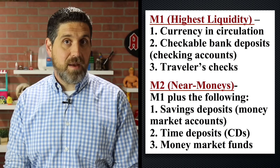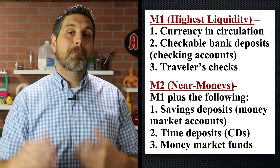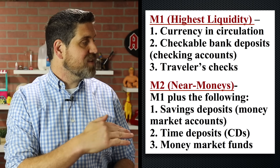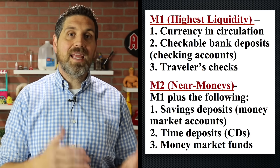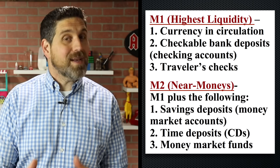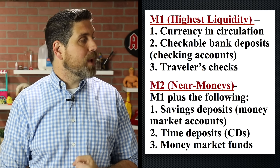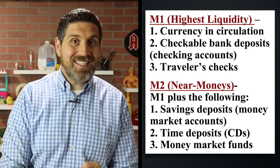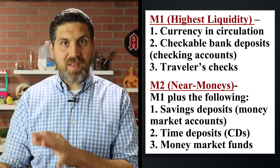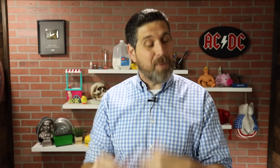M2 is near monies — it includes everything in M1 plus money in savings accounts, CDs, and money market funds. The point is this is all money because it has high liquidity: it can be quickly and easily converted into something that can be used as a medium of exchange.